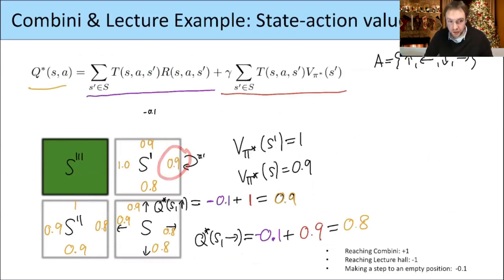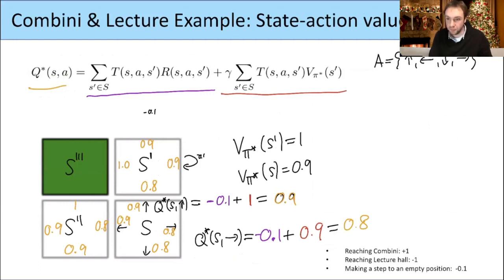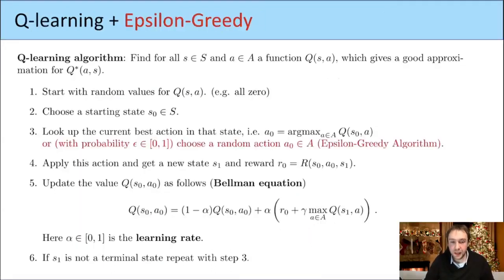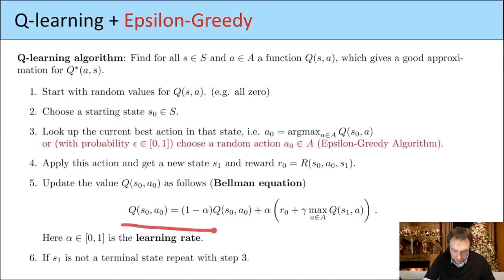The goal is to find these orange numbers. This is what we want to do in the Q-learning algorithm, because we want to learn these values of Q. We start with some random or zero numbers and use this algorithm and the Bellman equation to slowly get an approximation for these orange numbers.